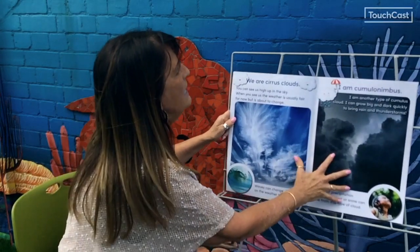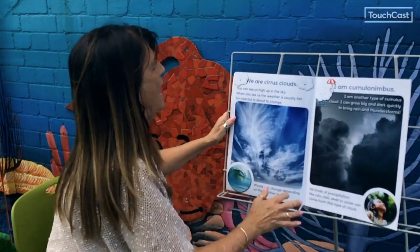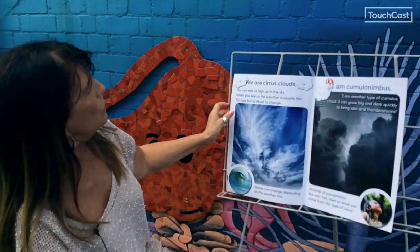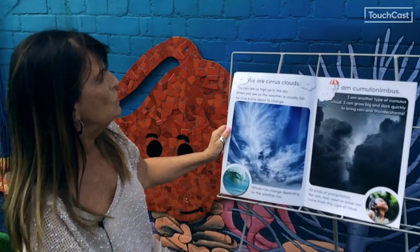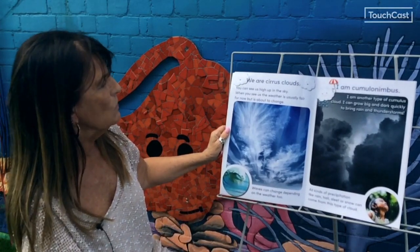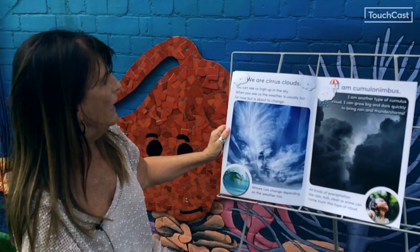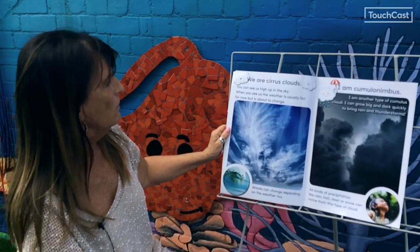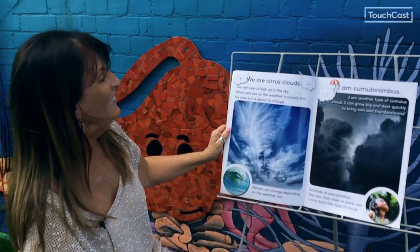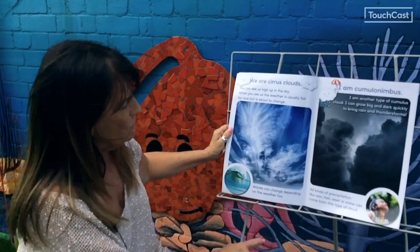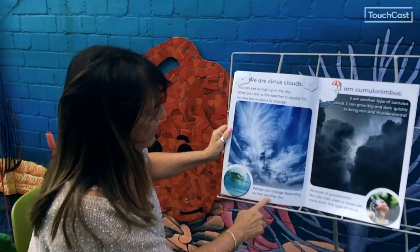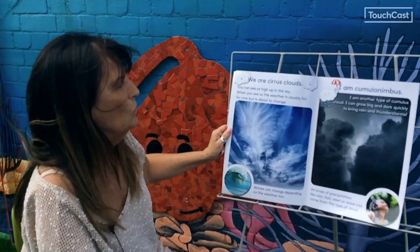We are cirrus clouds. You can see us high up in the sky. When you see us, the weather is usually fair for now but is about to change. Waves can change depending on the weather too.